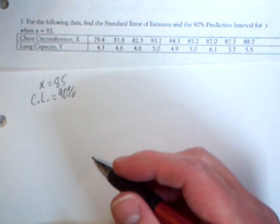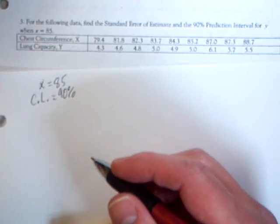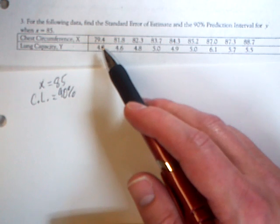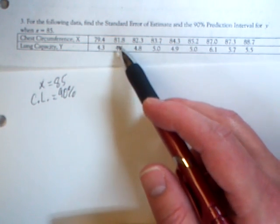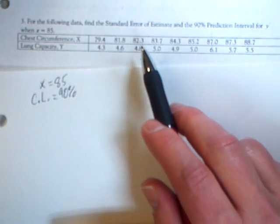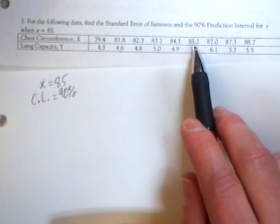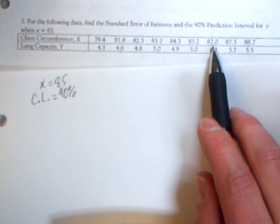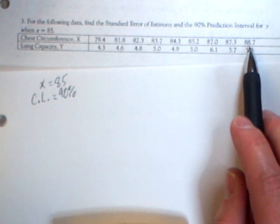Now we understand that the data goes into L1 and L2. Stat, enter. It is our responsibility to type in our X values into L1, so please type the following data values into L1: 79.4, 81.8, 82.3, 83.7, 84.3, 85.2, 87.0, 87.3, and 88.7. There should be nine values in L1.